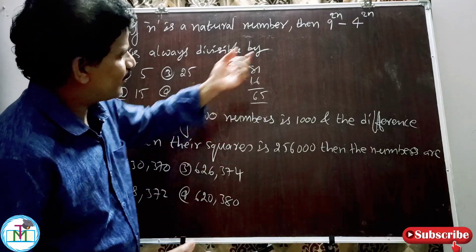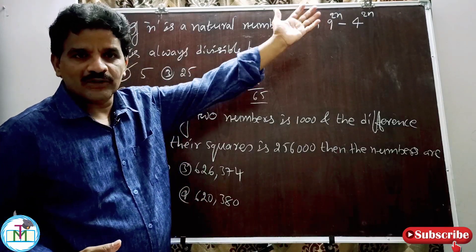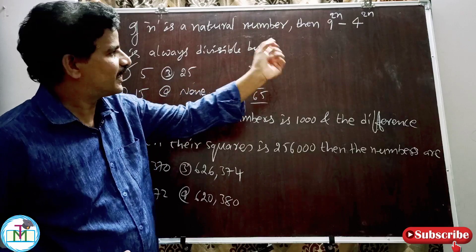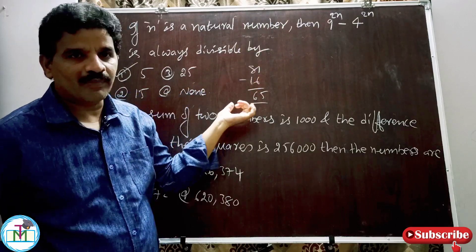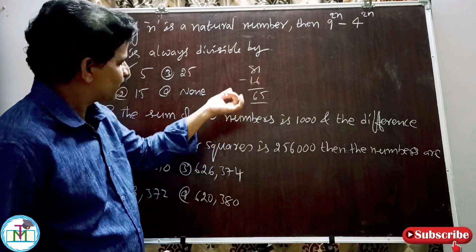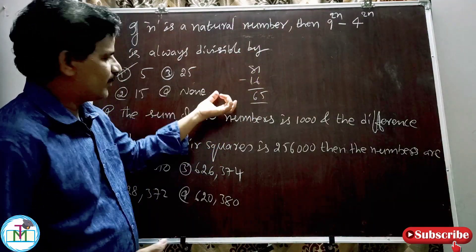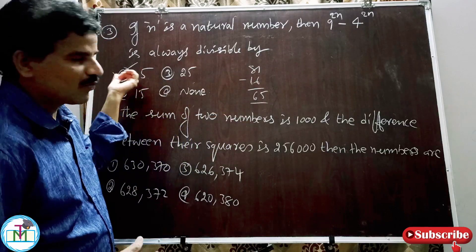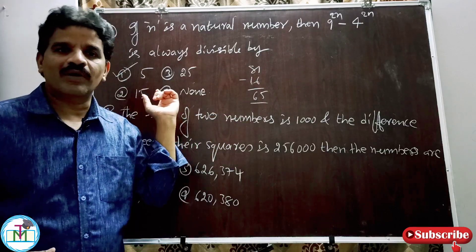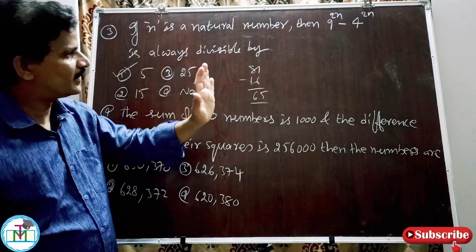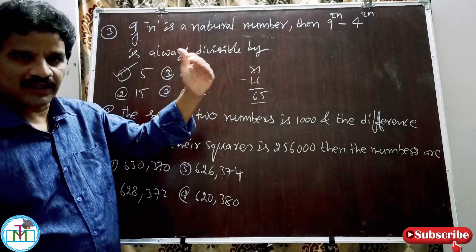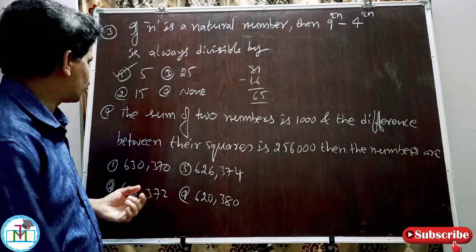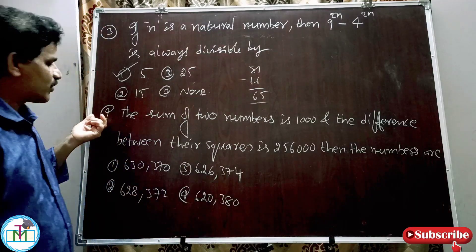When you have expressions with powers like 2n, 2n+1, 3n, or 3n+2, at the 10th class exam level, substituting N=1 is a satisfactory and efficient approach to find divisibility.